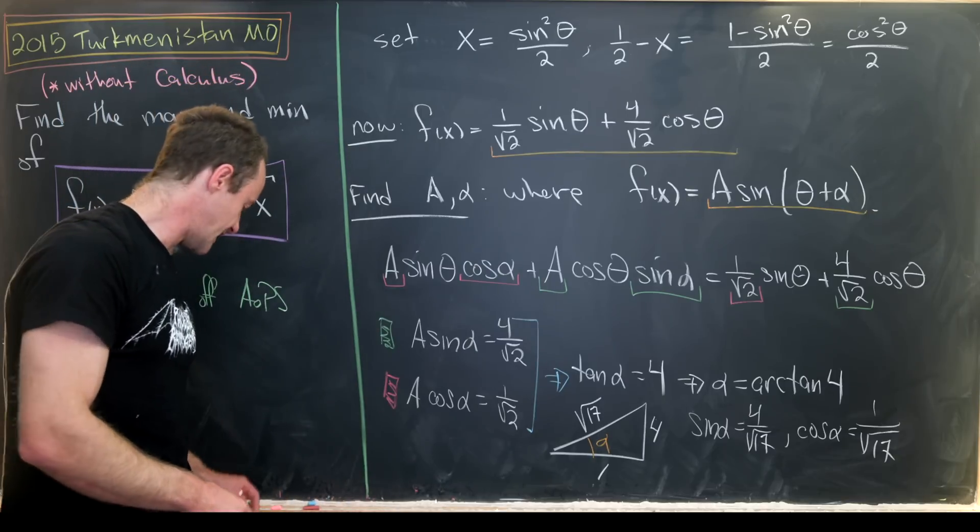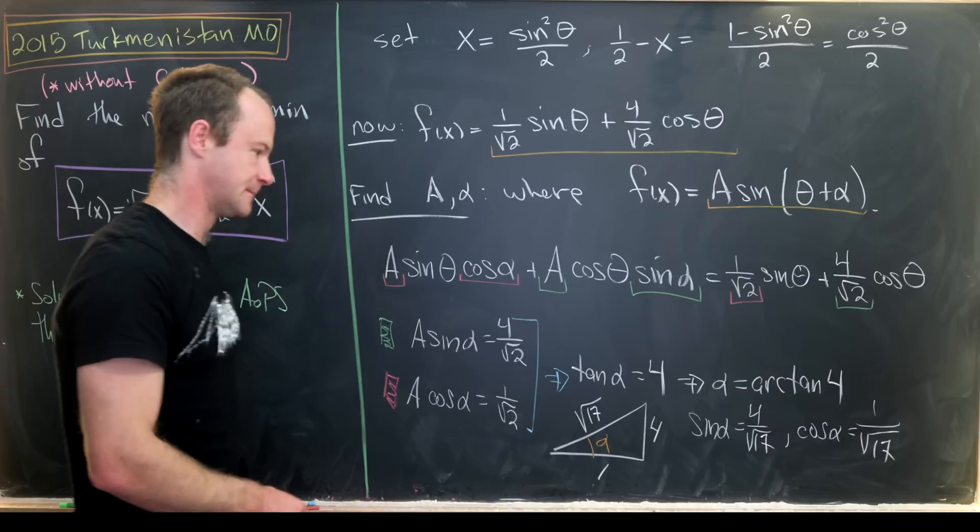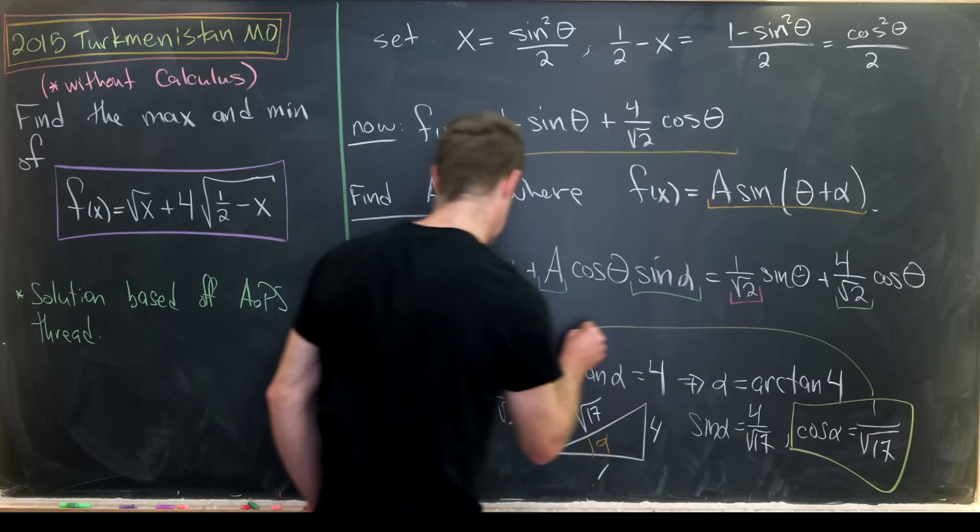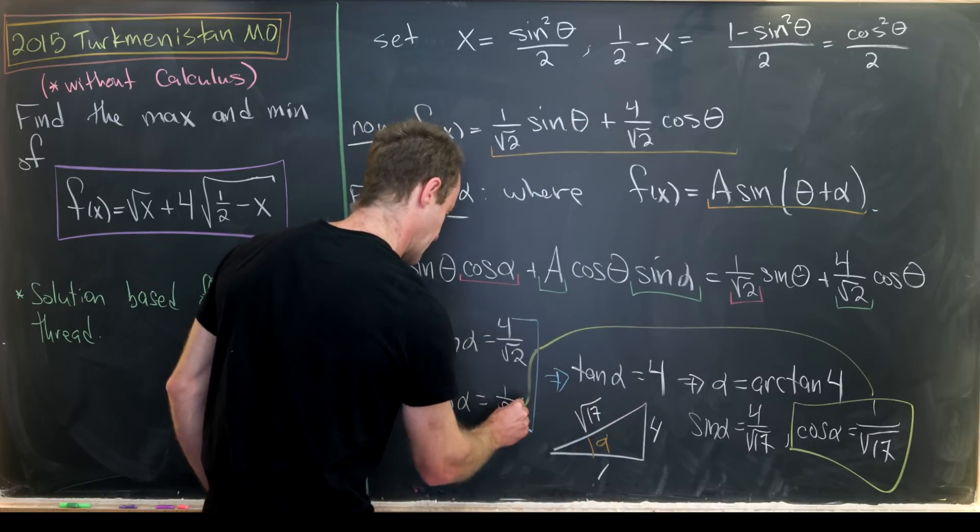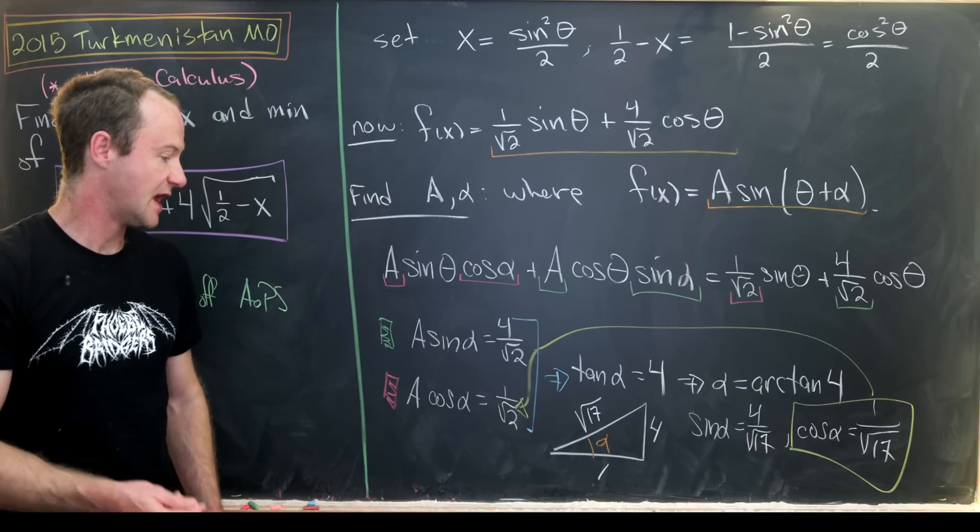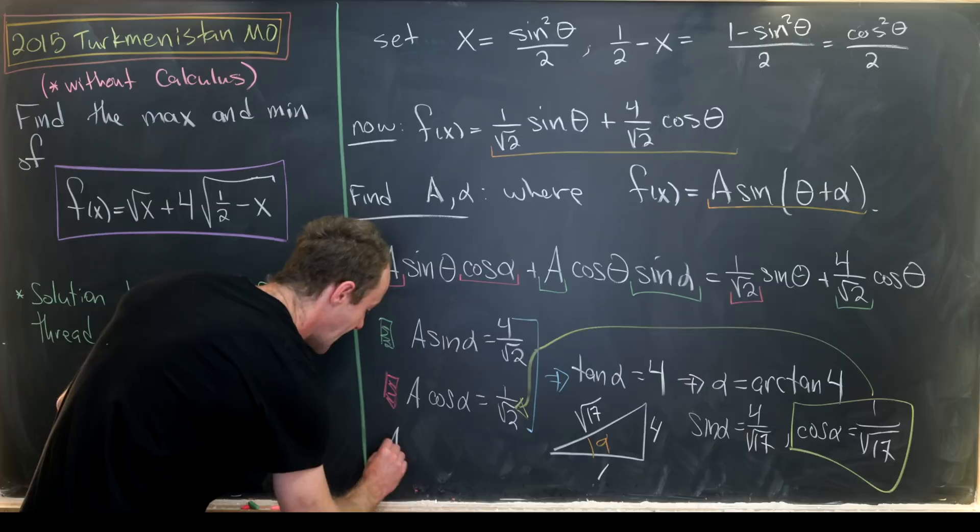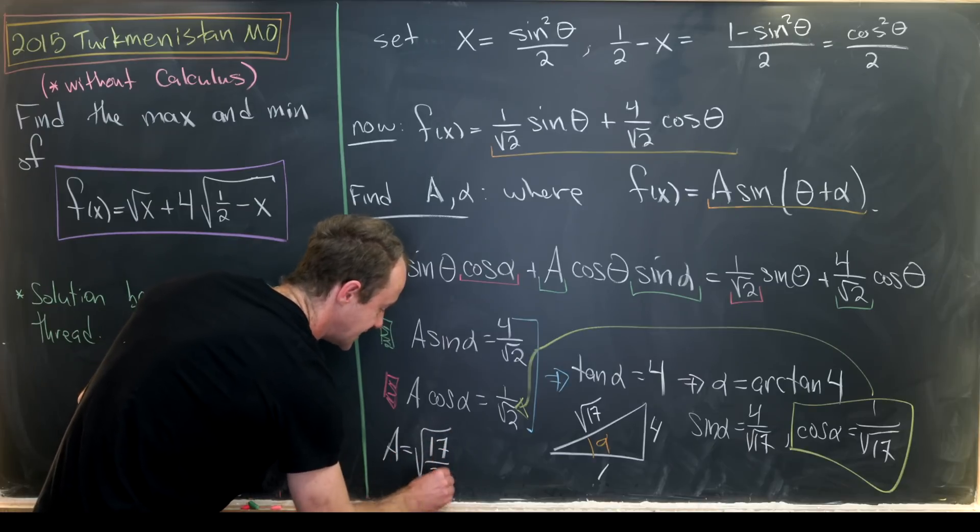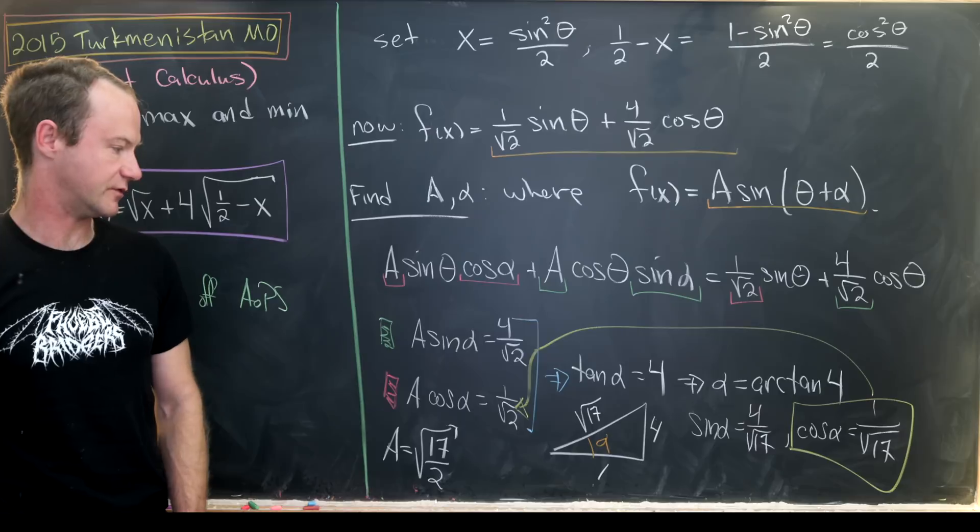But now we can loop that or maybe one of these like this into our equation right here. Maybe we'll loop it into this A times cosine of alpha equation. And what we'll see is that A is in fact equal to the square root of 17 over 2, where that whole square root is in the denominator.